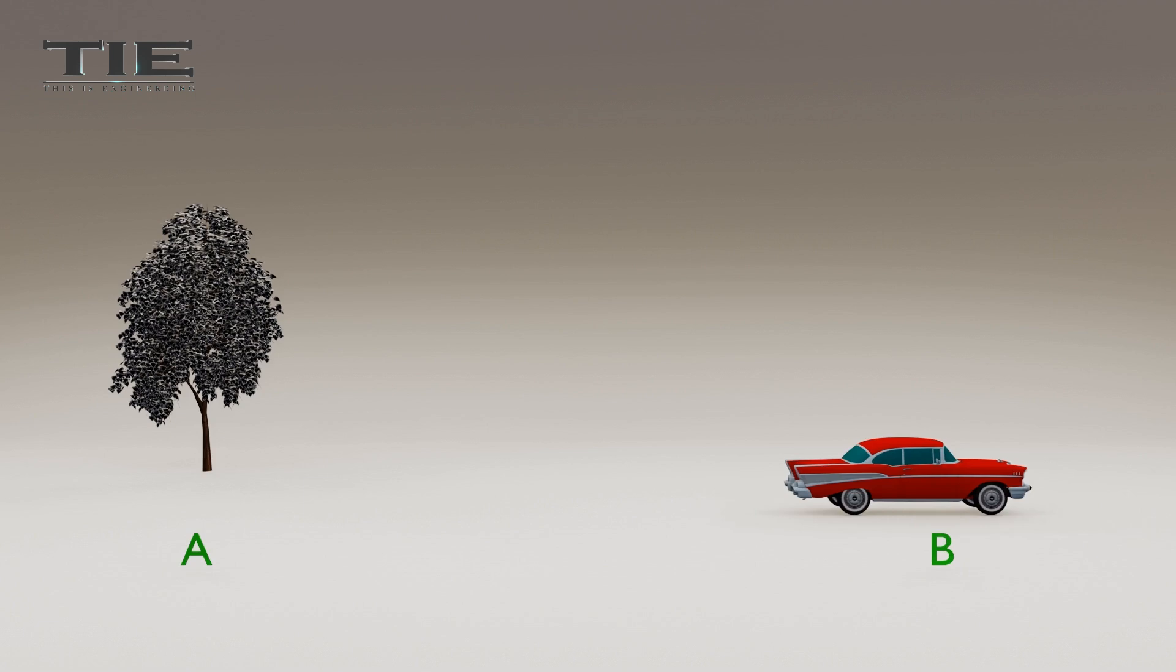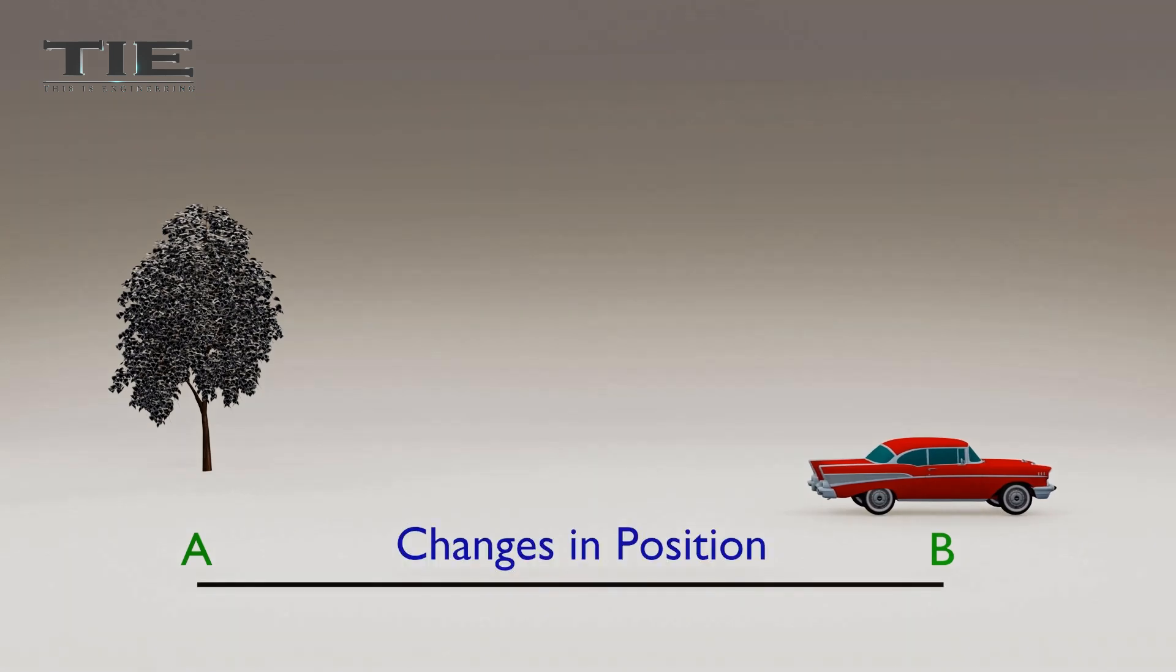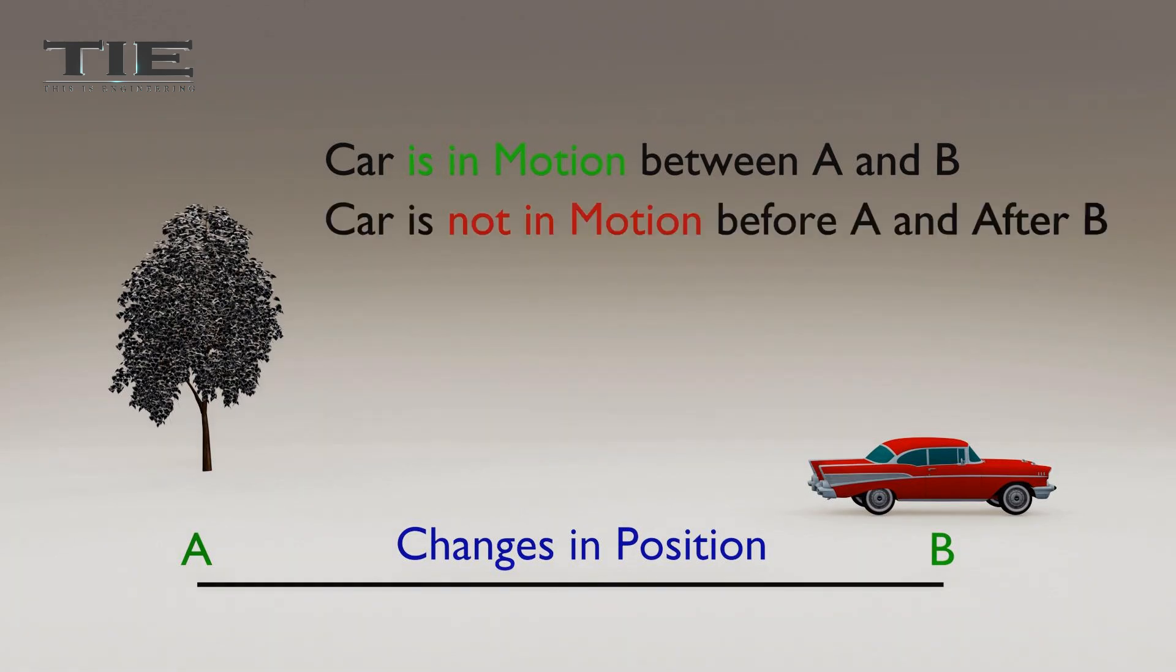it changes its position over time relative to the tree. This change in position indicates that the car is in motion. The car is not in motion before position A and after position B, because the position of the car didn't change before position A and after position B. So the car is in motion only between position A and B.